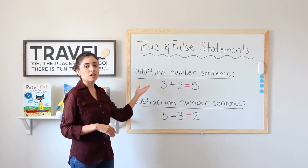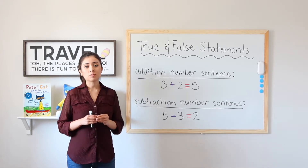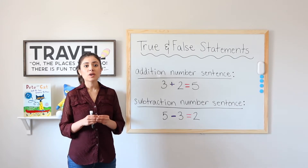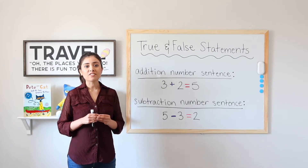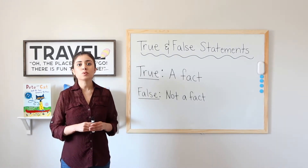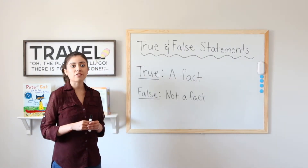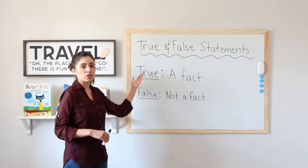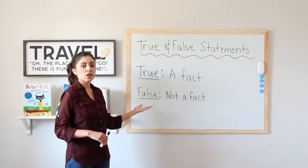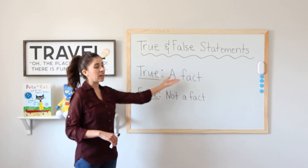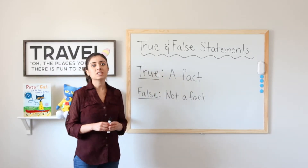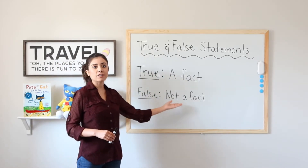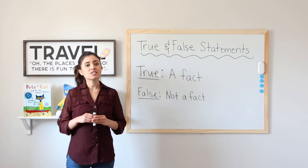If you would like to focus on addition number sentences and deciding if they are true or false, go ahead and check out that video. We will look to see if our subtraction number sentences are true or false. Remember, true is a fact — that means it is real. False means not a fact — it is not real.